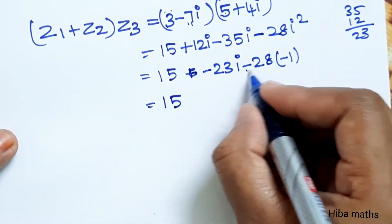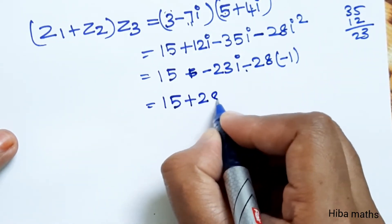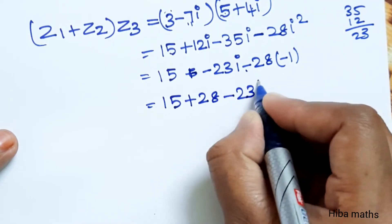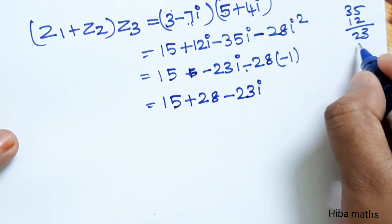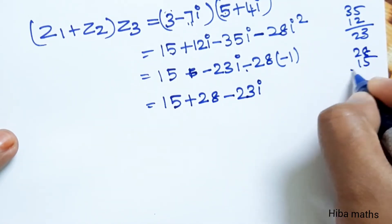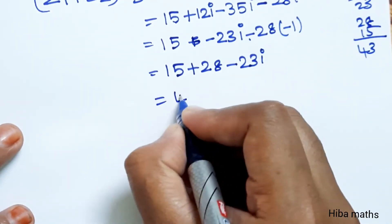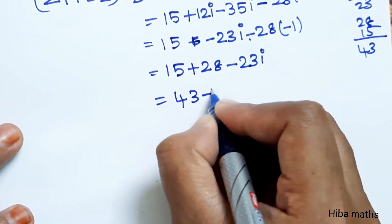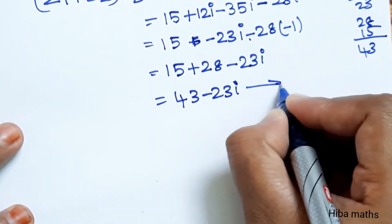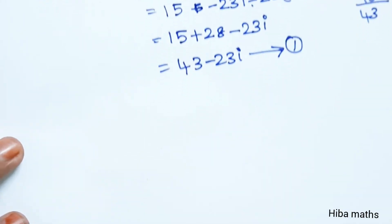Since i squared equals minus 1, minus 28i squared becomes plus 28. So: 15 plus 28 is 43, and 12i minus 35i is minus 23i. The LHS answer is 43 minus 23i. This is the first answer.